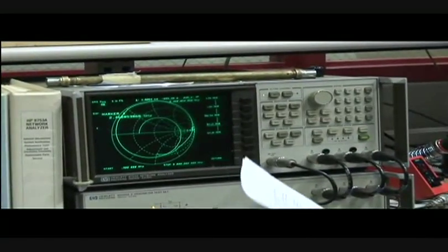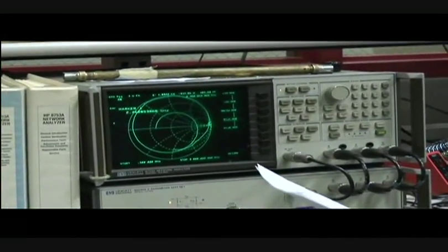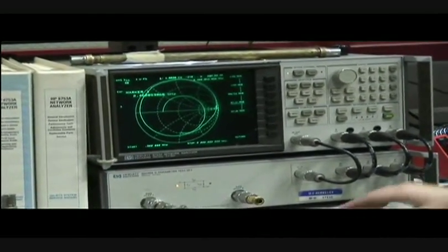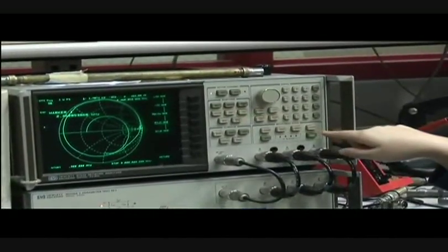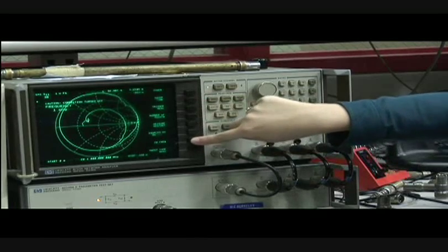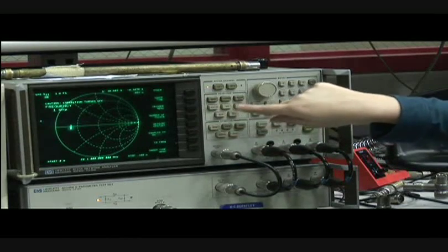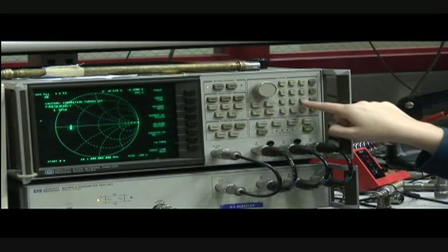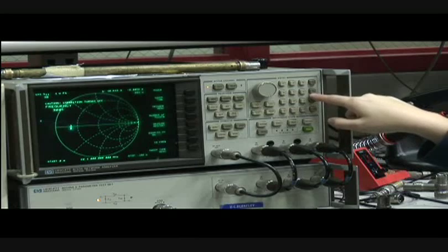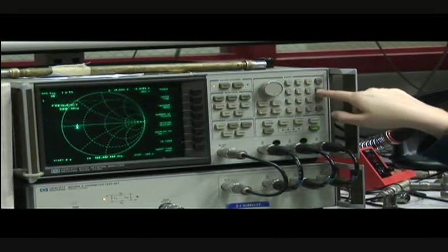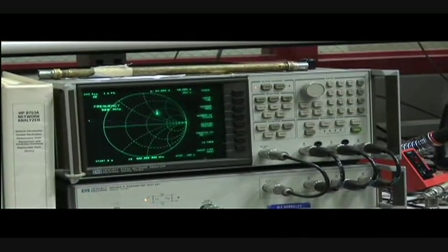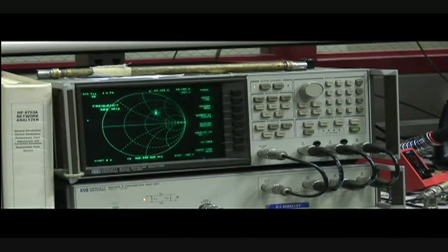So for the single stub matching you first set the instrument to 300 megahertz. So by doing that you press menu, CW frequency and then over here you do 300 and then you press M over mu right here. And so now we're measuring it at this particular frequency.